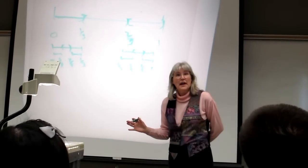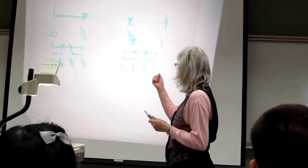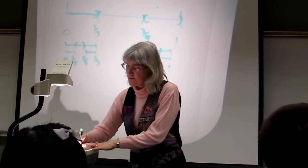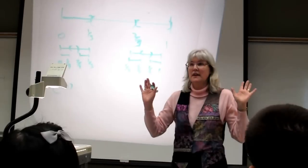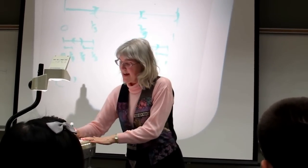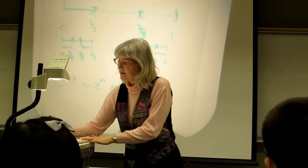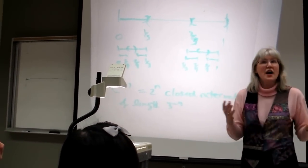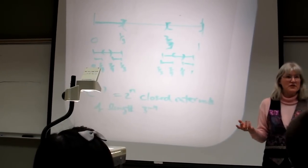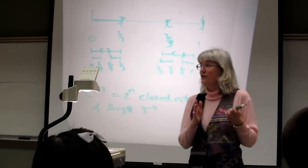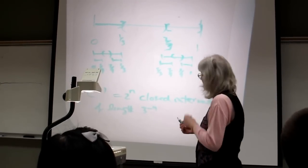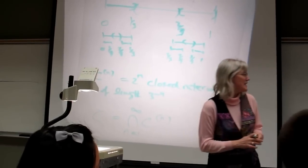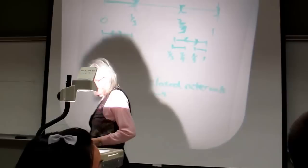We just keep doing this forever. At step n in the construction, we form sets C_n. C_1 is the two intervals [0, 1/3] and [2/3, 1], and C_n in general is 2^n closed intervals of length 3^(−n). Each time we remove the middle third, we double the number of intervals, so we have 2^n after n steps, and each interval has length 3^(−n). The Cantor set is the intersection of all these sets C_n — what's left after removing middle thirds forever.